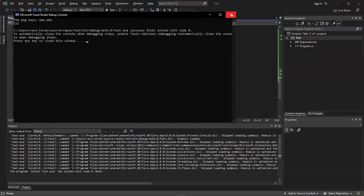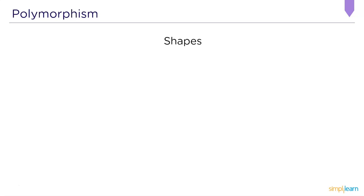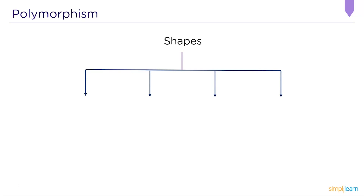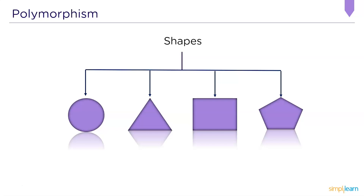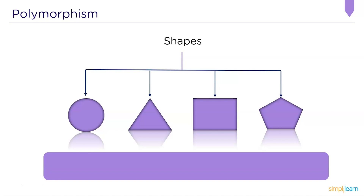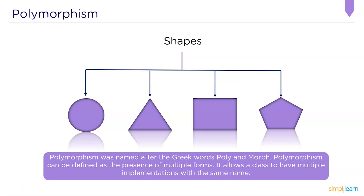Now let's look at the last OOP concept — polymorphism. The term polymorphism refers to the presence of multiple forms. In OOP, it is frequently expressed as one interface, multiple functions. Polymorphism can be static or dynamic: in static polymorphism the response to a function is determined at compile time, while in dynamic polymorphism it is decided at runtime.